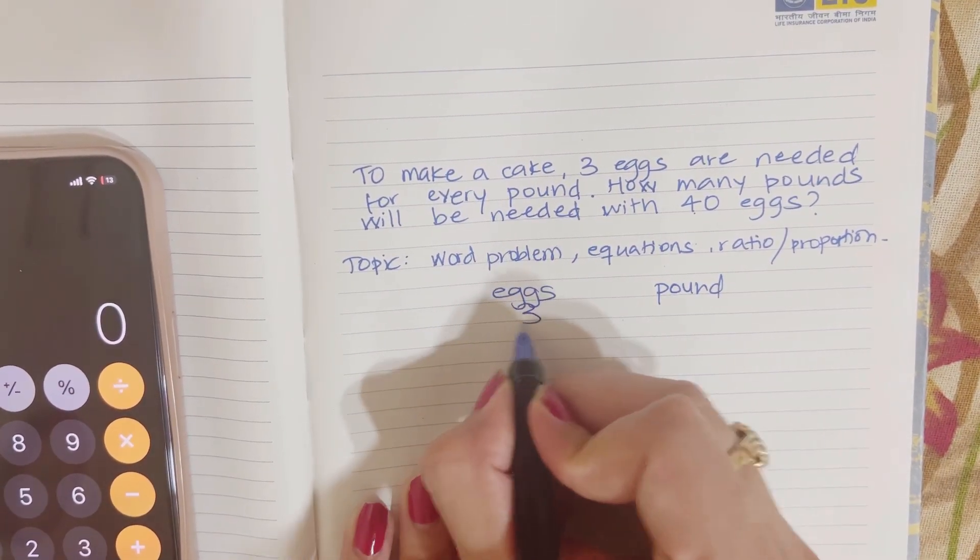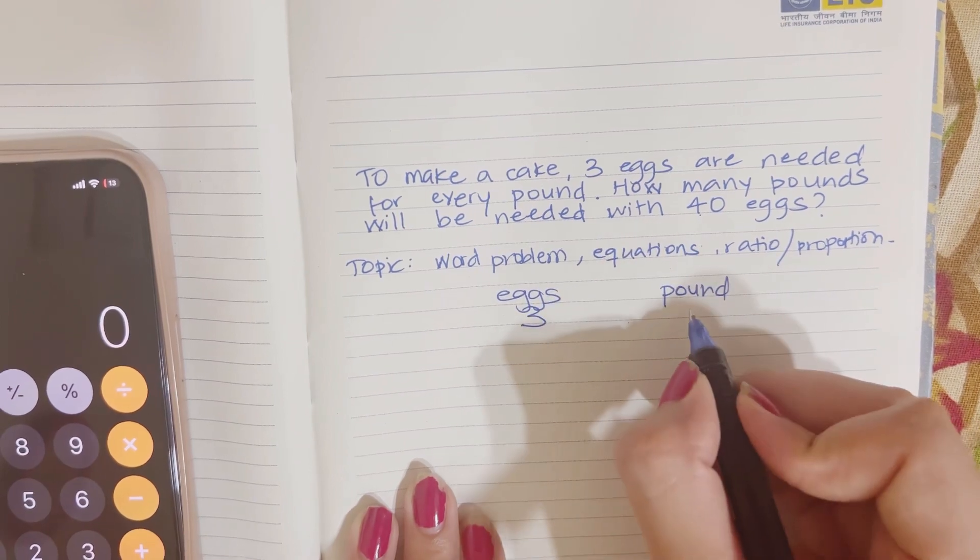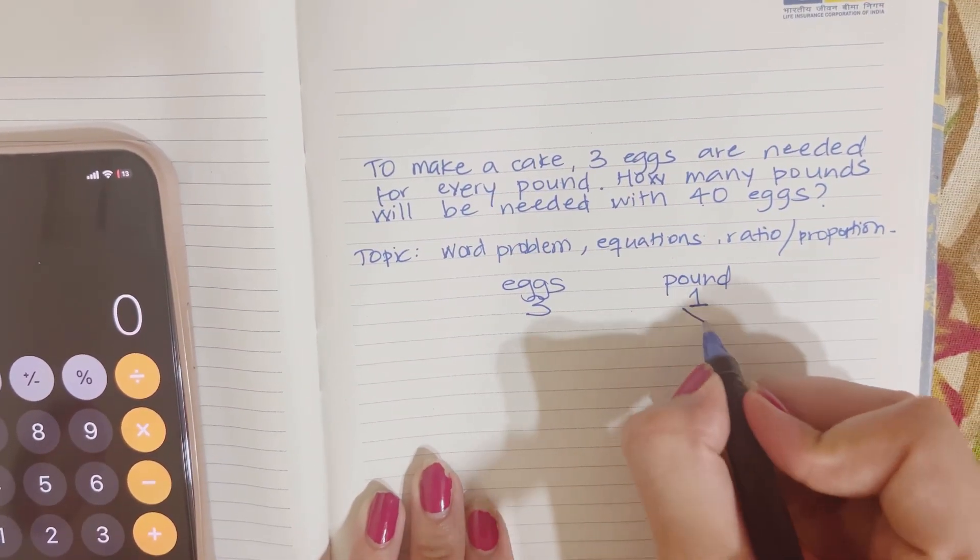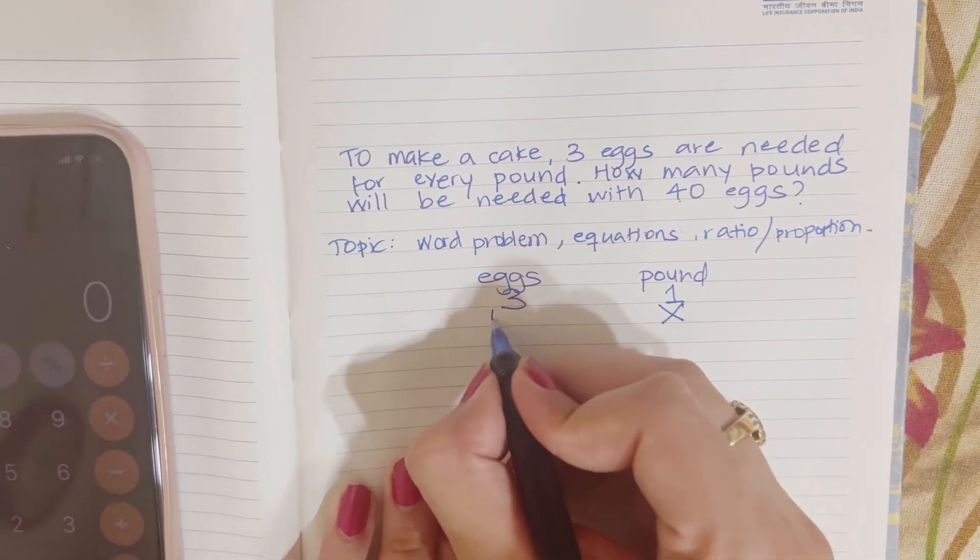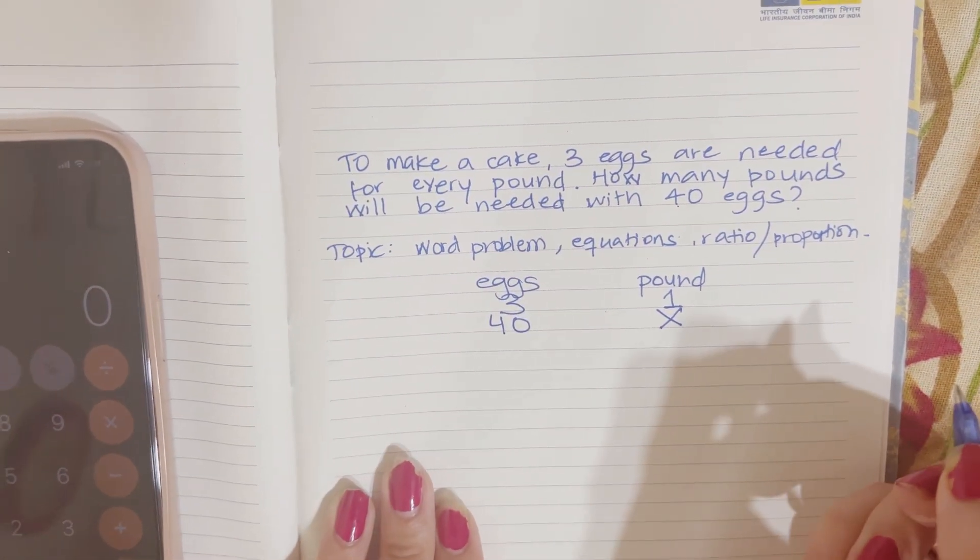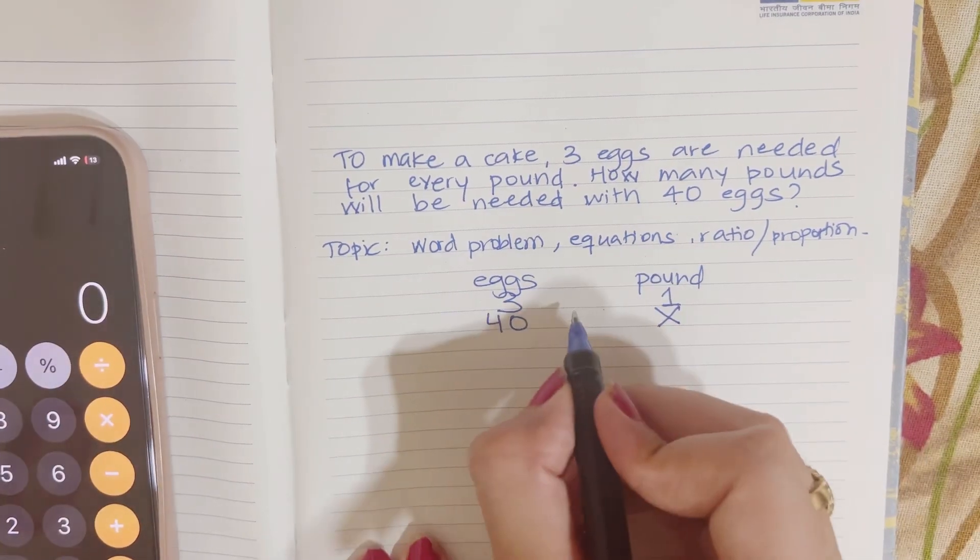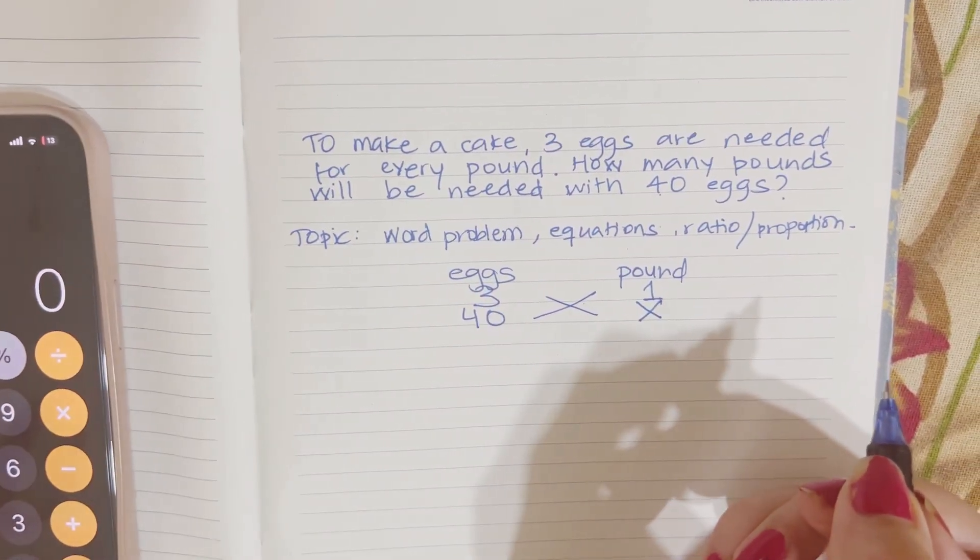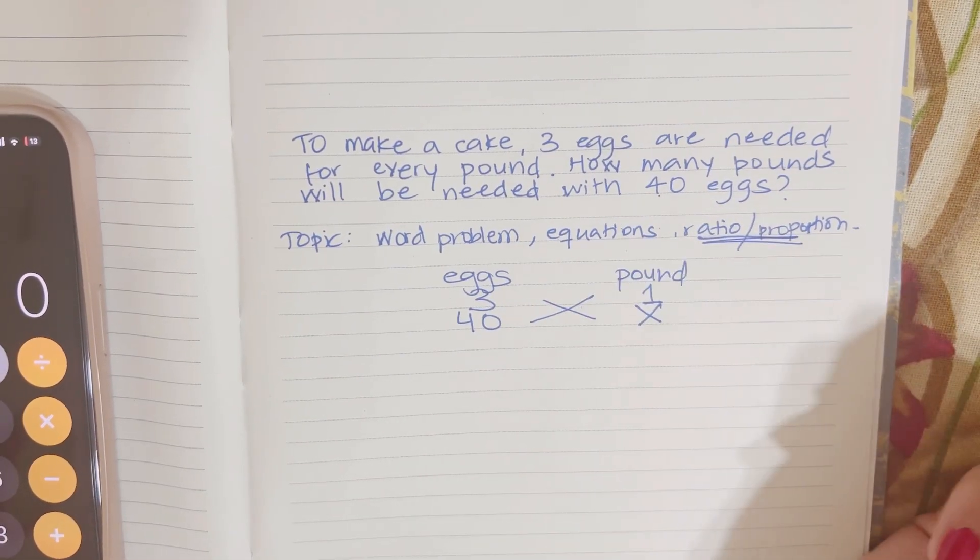We have eggs and we have pounds. We need 3 eggs for 1 pound. And how many pounds - that's our x - will be needed with 40 eggs? Again, cross multiply. Once you have everything set, you just cross multiply and use ratio and proportion basics.